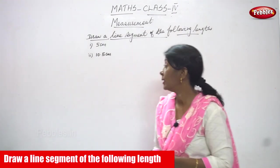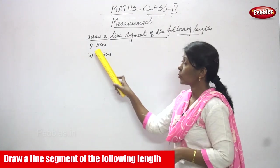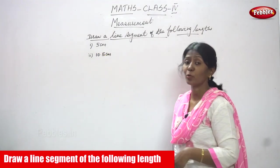Now, we are going to do the sum, draw a line segment of the following length. The question is given 5 cm and 10.5 cm.